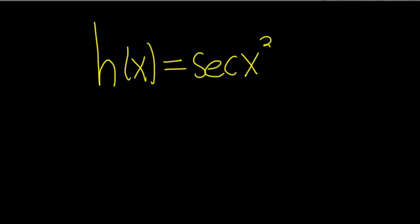Find the derivative of h(x) = sec(x²). Solution: this is really this. The parentheses weren't included in the original problem, so this adds a little bit more clarity with the parentheses. It's the secant of x squared.